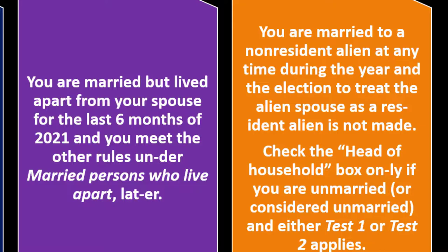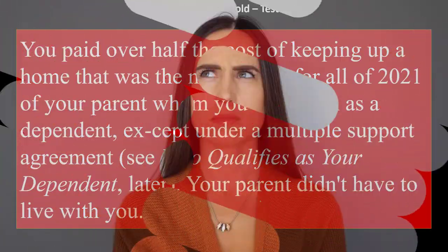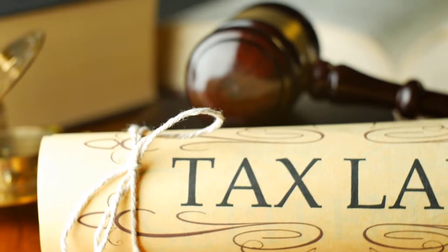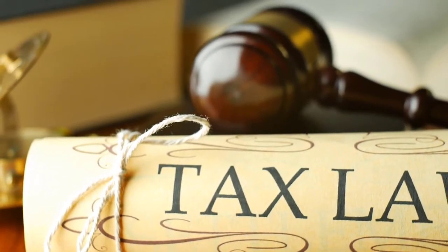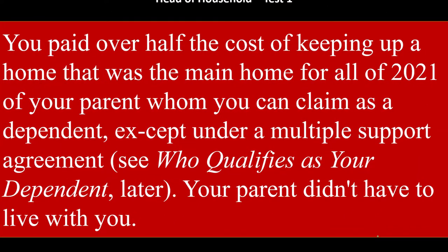Head of household test number one — remember, you only need to meet one of the two tests; it's an OR test. When looking at tax law or instructions, keep aware of whether it says 'or' versus 'and.' In test number one, you paid over half the cost of keeping up a home that was the main home for all of 2021 of your parent, whom you can claim as a dependent, except under a multiple support agreement. That exception with the multiple support agreement is another kind of gray area.